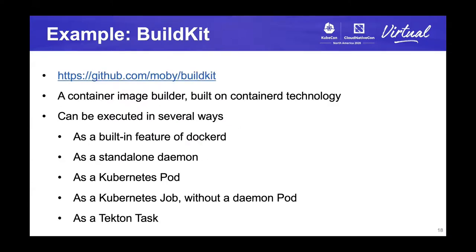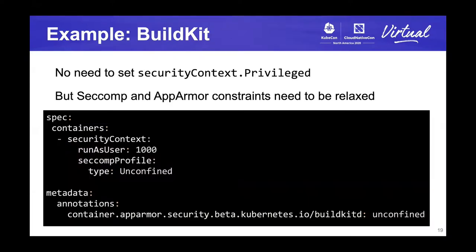Next is BuildKit, a container image builder built on containerd technology, and also adopted by Docker build. BuildKit can be executed in several ways, such as as a part of dockerd, or as a standalone daemon, or as a Kubernetes job, or as a Tekton task. To run BuildKit inside Kubernetes, you don't need to set securityContext.privileged, but you might need to specify securityContext.seccompProfile and AppArmor annotations to allow calling several system calls, such as unshare and mount.